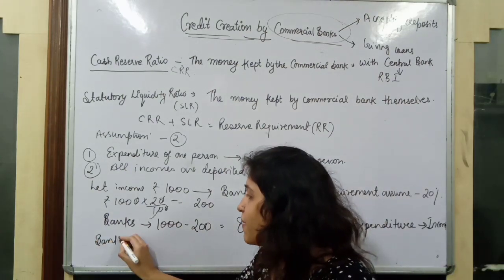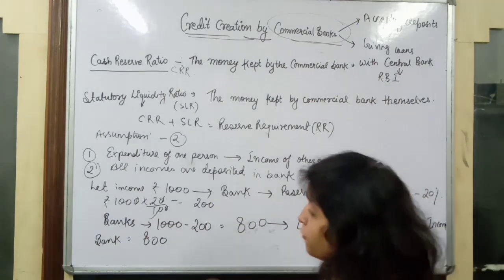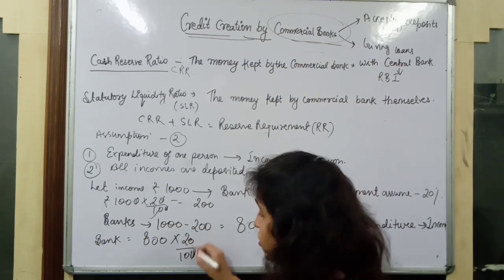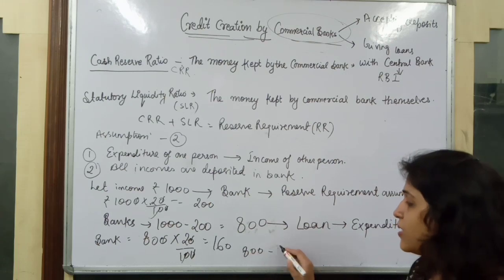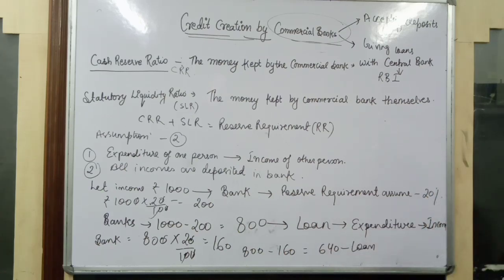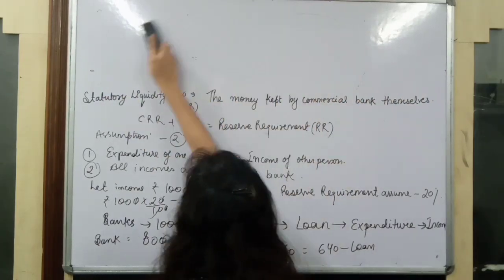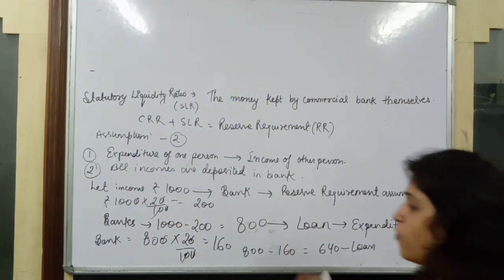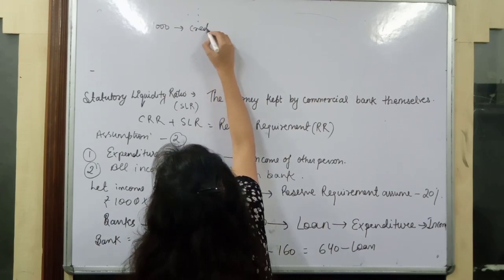The bank now has 1,000 rupees. It keeps 20% as reserve, which is 200 rupees. Then the bank lends out 800 rupees. That 800 goes to another bank, which keeps 20% — that is 160 rupees — and gives out 640 as a loan. That loan becomes expenditure, which becomes someone else's income, and the cycle continues.